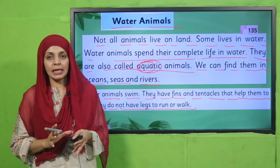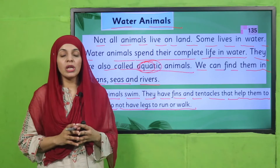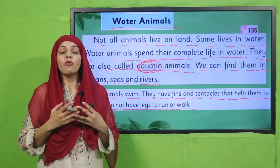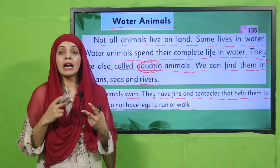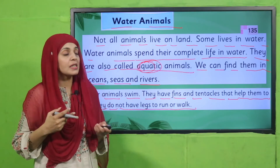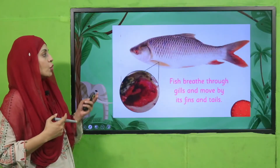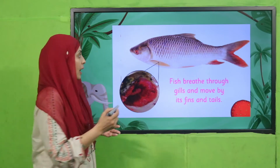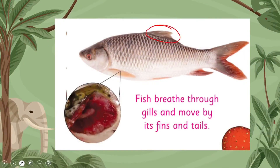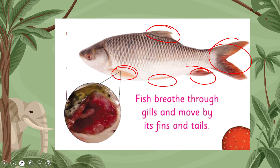Mode of movement is very important. For moving in water, fish have fins. These are the fins of the fish and they help the fish swim. The gills of the fish — called gilz — help the fish breathe in water. So these are the gills and these are the fins.